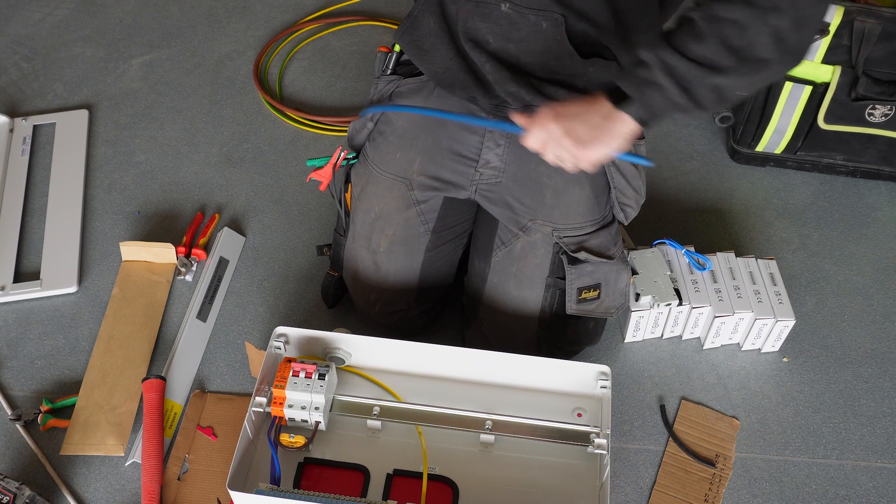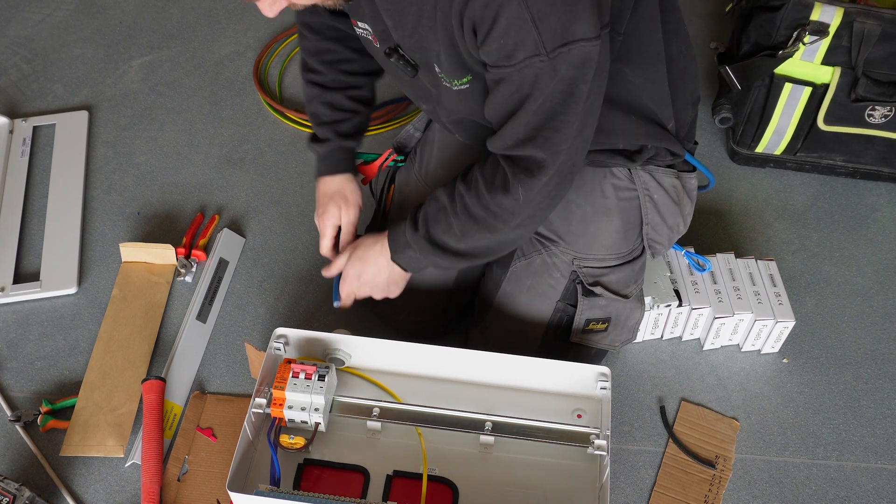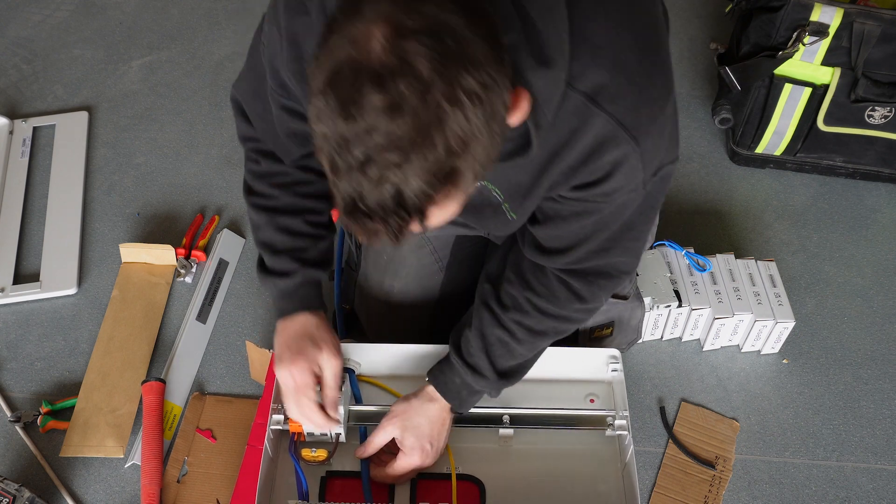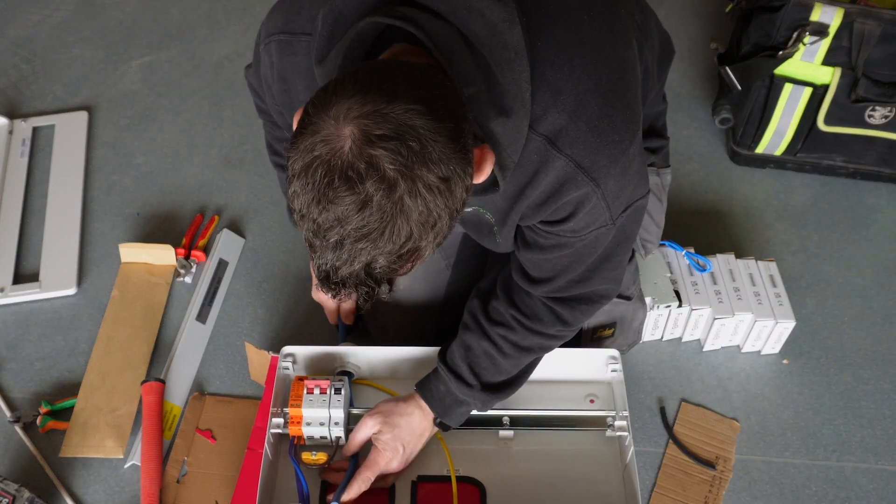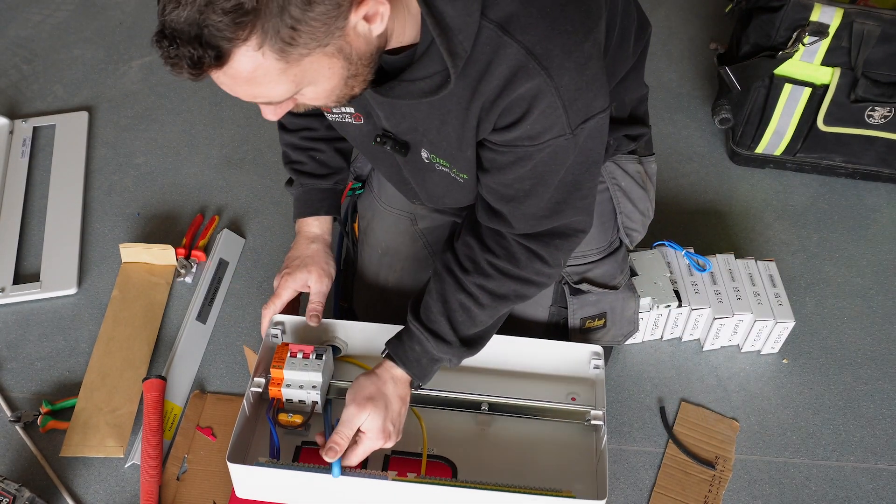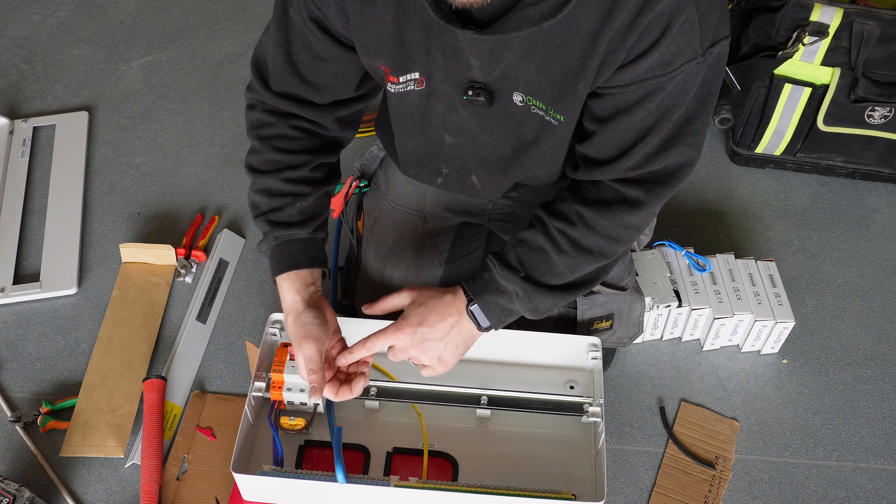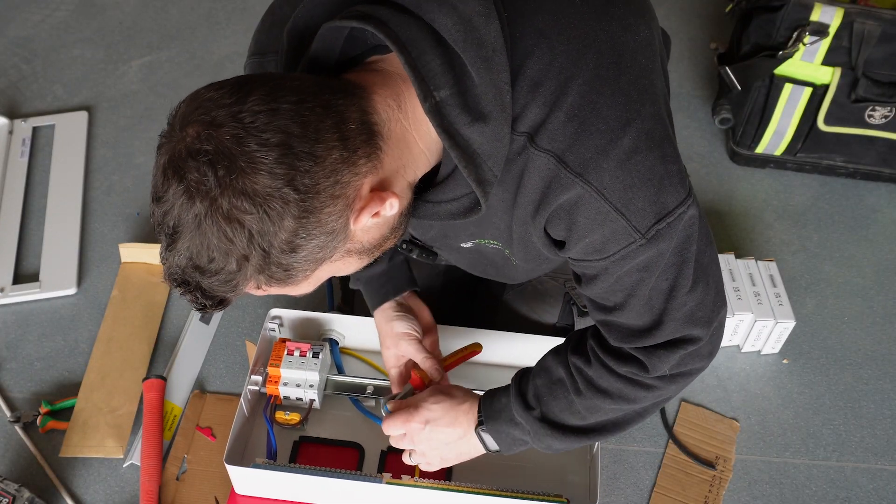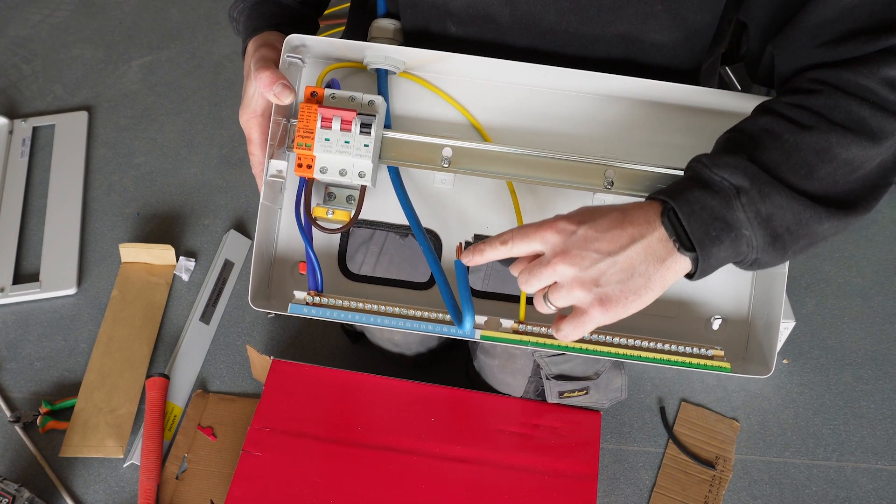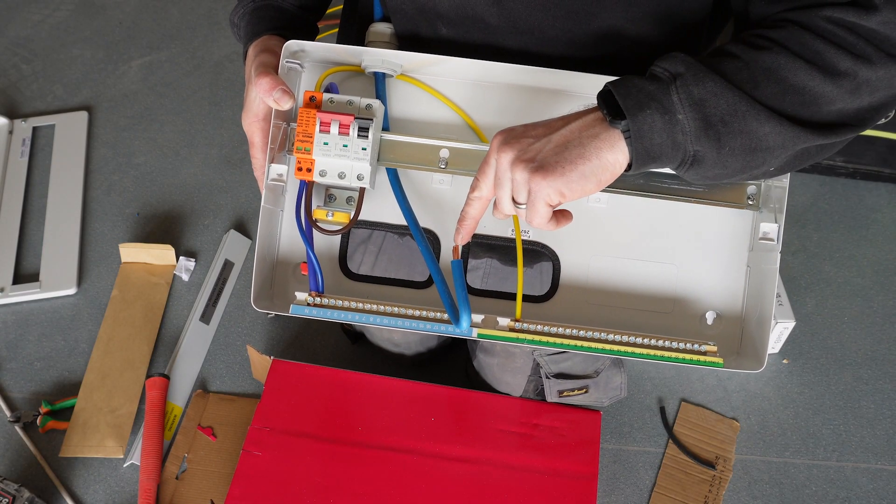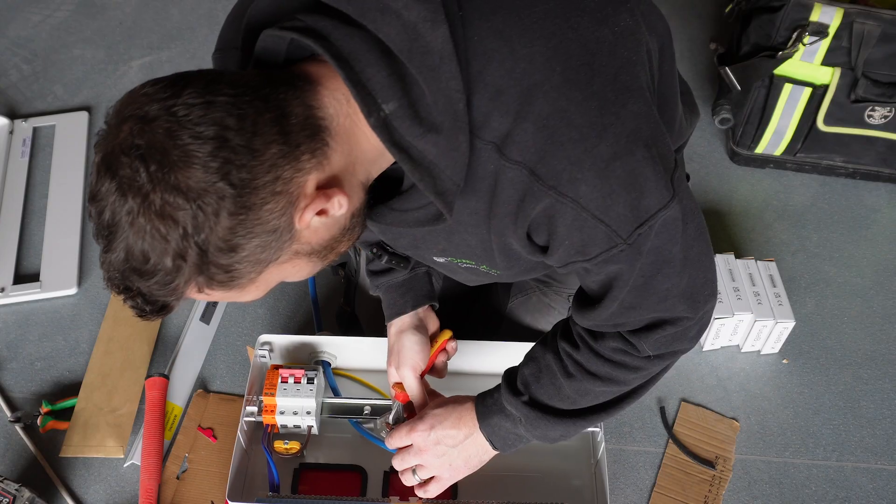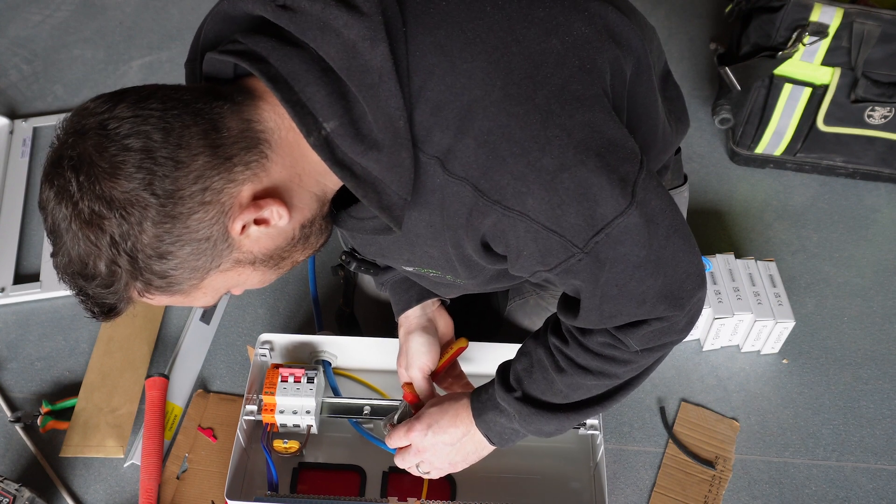I always start with the actual neutral itself. I always bend it over sort of a palm's width. As you've bent it, you'll notice that some of the cores are all on different lengths now, whereas they weren't before. You need to make sure that they're all flat and level.